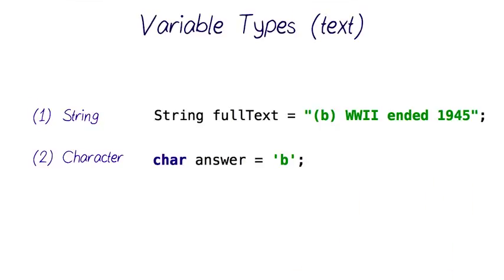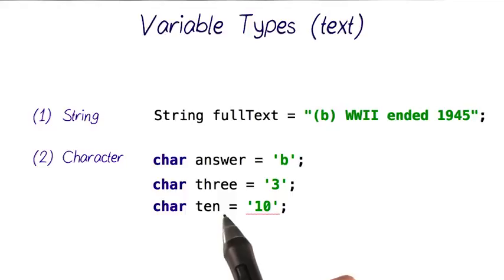You can store any type of character into a character variable, even single digits like the number three. But be careful not to confuse it with an integer three. A character variable is used to display text or concatenate it with other strings, but not for mathematical operations like with integers or longs. Also remember that a character can only store one letter. So if we try to set this character variable to this one zero setting here, Java would complain and won't accept it.